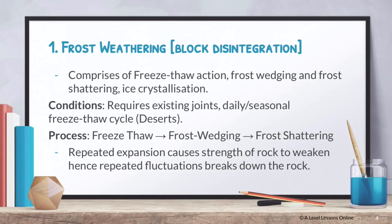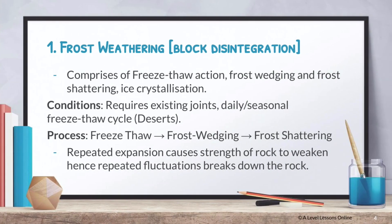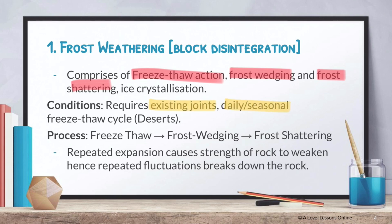Frost weathering — you need to know — is basically a case of block disintegration. You're basically breaking down blocks. It comprises three main processes: you have got freeze-thaw action, frost weathering, and frost shattering. Ice crystallization is basically a kind of end product of it all. The conditions required are existing joints as well as a daily or seasonal freeze-thaw cycle — basically areas with huge diurnal temperature ranges. For example, deserts make it very favorable for frost weathering to take place.